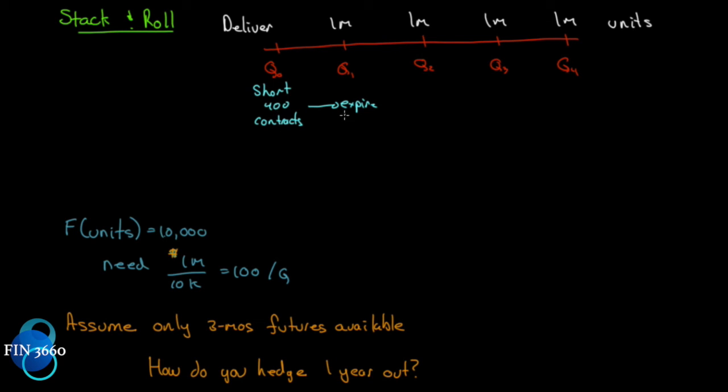So if we short 400 contracts and they expire here, we will then roll forward 300 contracts. And they will expire here. And once we get here, we will roll forward 200 contracts, which will expire in quarter three. And once we get here, we will then roll forward 100 contracts so that we are always hedged and they'll expire here in quarter four. So we have exposure to 4 million units over the course of the year. We short 400 contracts. So now we're short 4 million units in the contract. After they expire, we roll forward only what we're still exposed to, which is 3 million units, that will require 300 contracts, etc., etc.